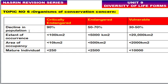Based on decline in population size: Critically Endangered — less than 90% decline; Endangered — 50 to 70% decline; Vulnerable — 30 to 50% decline. For extent of occurrence: Critically Endangered — less than 100 km²; Endangered — less than 5,000 km²; Vulnerable — less than 20,000 km². For area of occupancy: Critically Endangered — less than 10 km²; Endangered — less than 500 km²; Vulnerable — less than 2,000 km². For mature individuals: Critically Endangered — 250 or fewer; Endangered — less than 2,500; Vulnerable — 10,000.